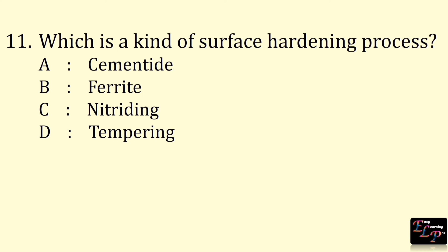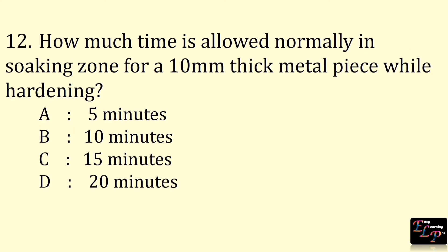Next question: which is the kind of surface hardening process? Nitriding is the surface hardening process. How much time is normally allowed in the soaking zone for a 10 mm thick metal piece while hardening? Soaking time is 5 minutes.